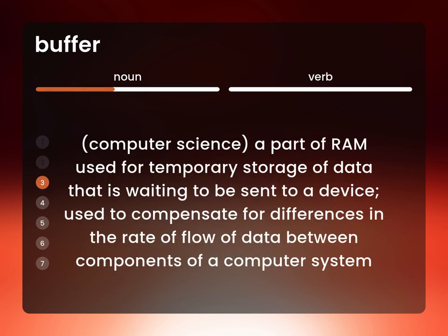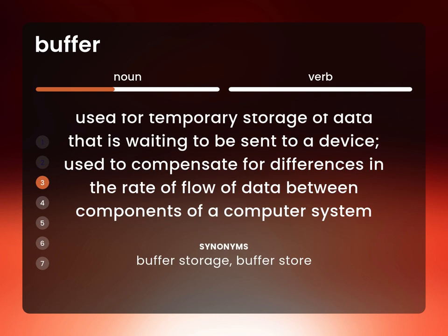Computer science. A part of RAM used for temporary storage of data that is waiting to be sent to a device, used to compensate for differences in the rate of flow of data between components of a computer system: buffer storage, buffer store.